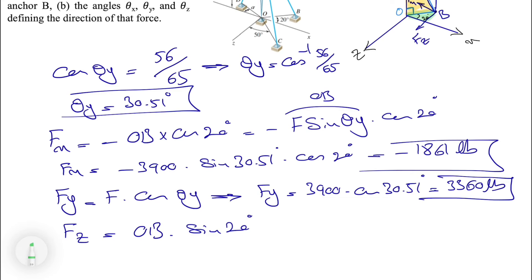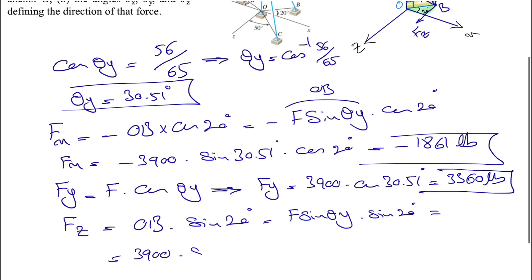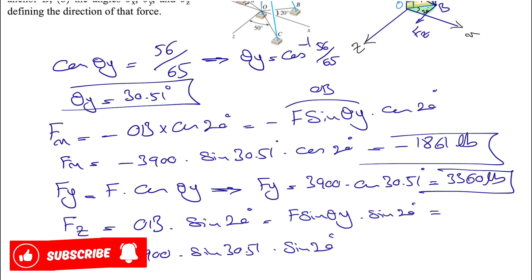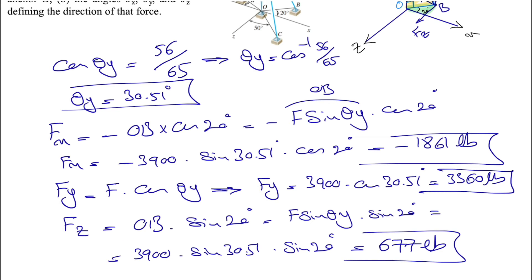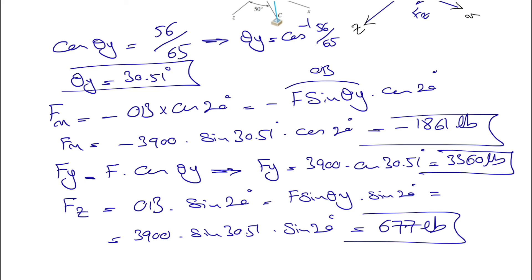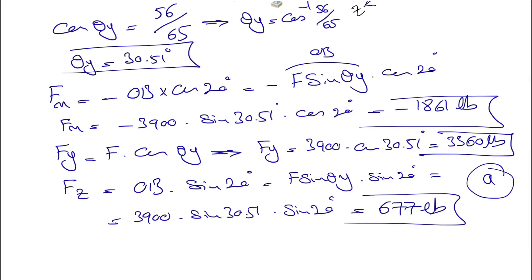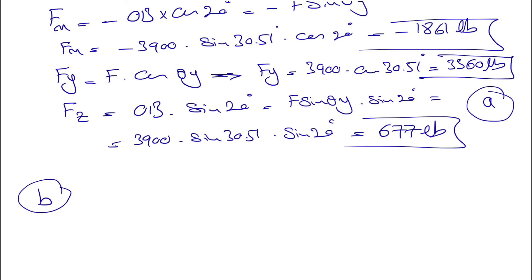For the z-component, from the right triangle highlighted in green, Fz = OB × sin(20°), where OB = F × sin(theta_y). With F = 3900 and theta_y = 30.51°, we compute Fz and get 677 pounds. That completes part A: Fx = -1861, Fy = 3360, and Fz = 677 pounds.